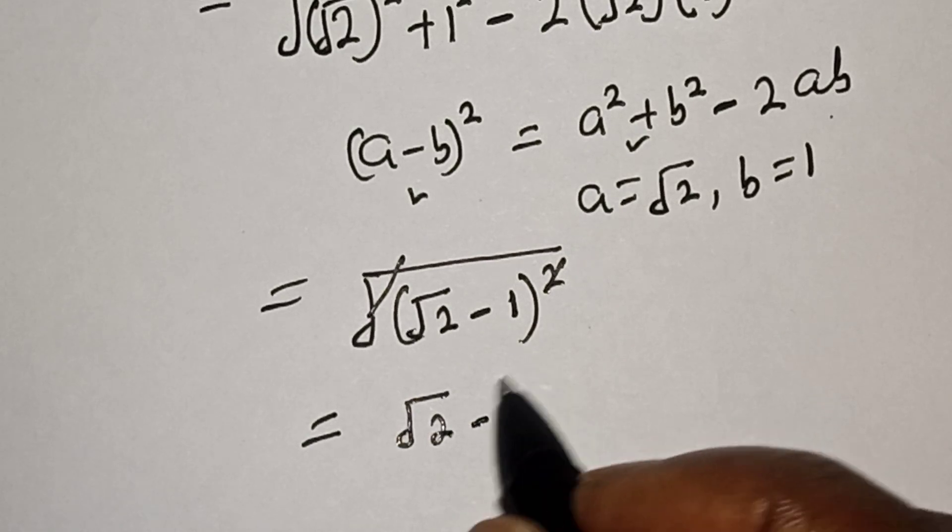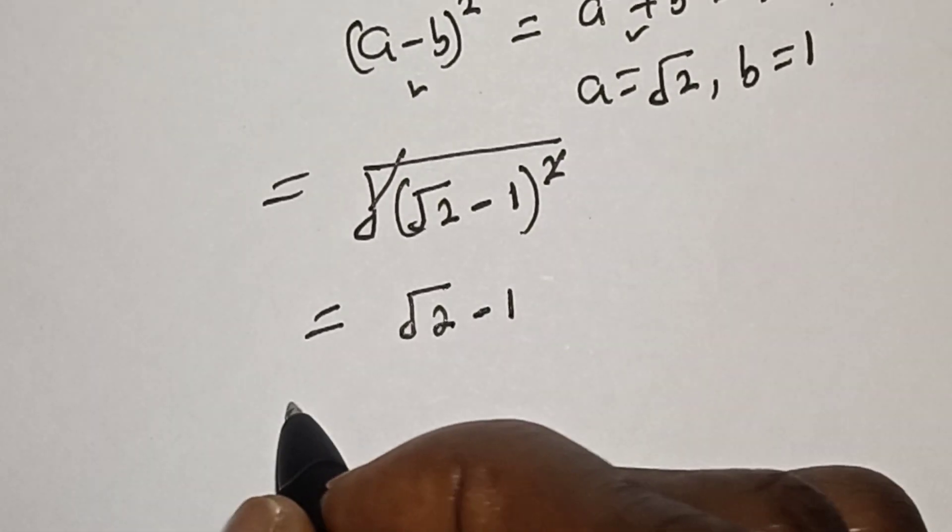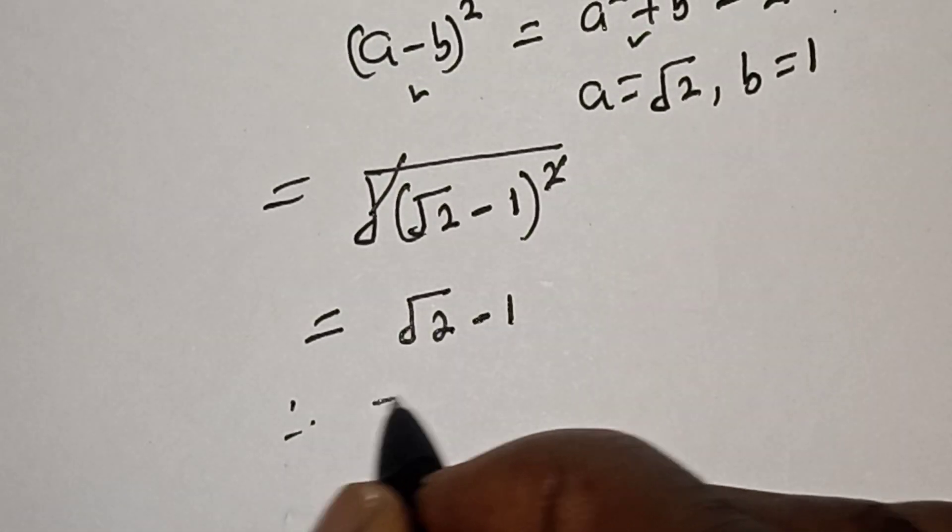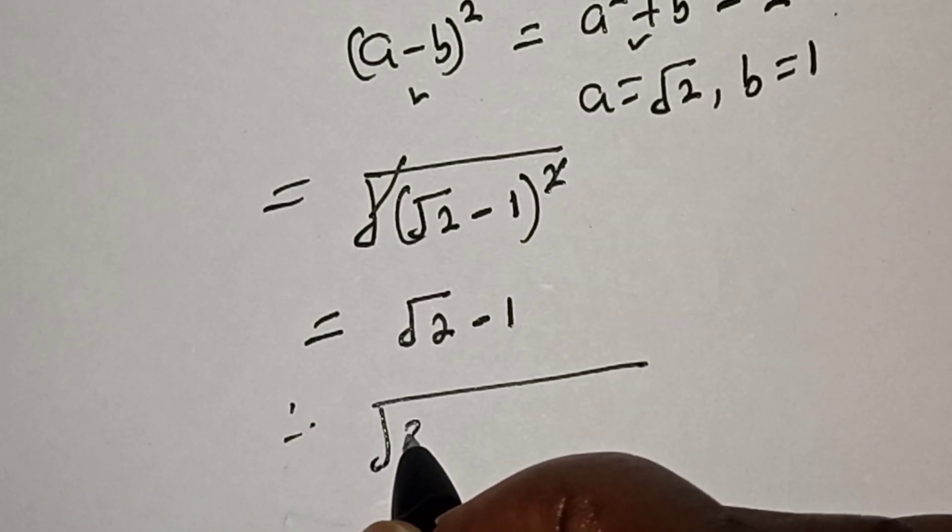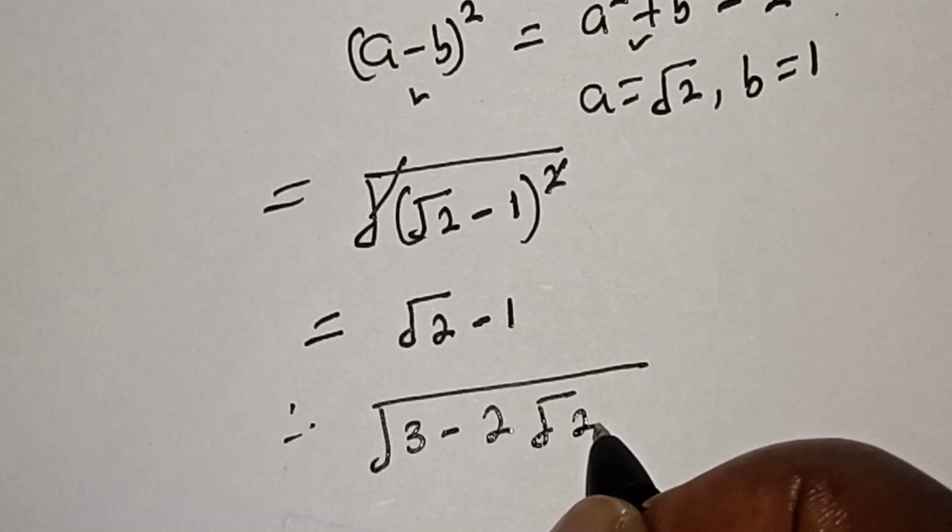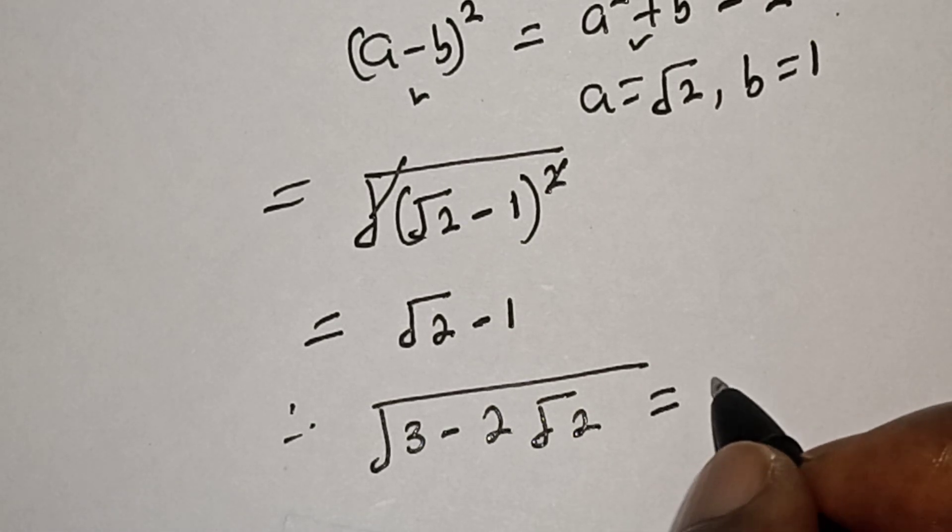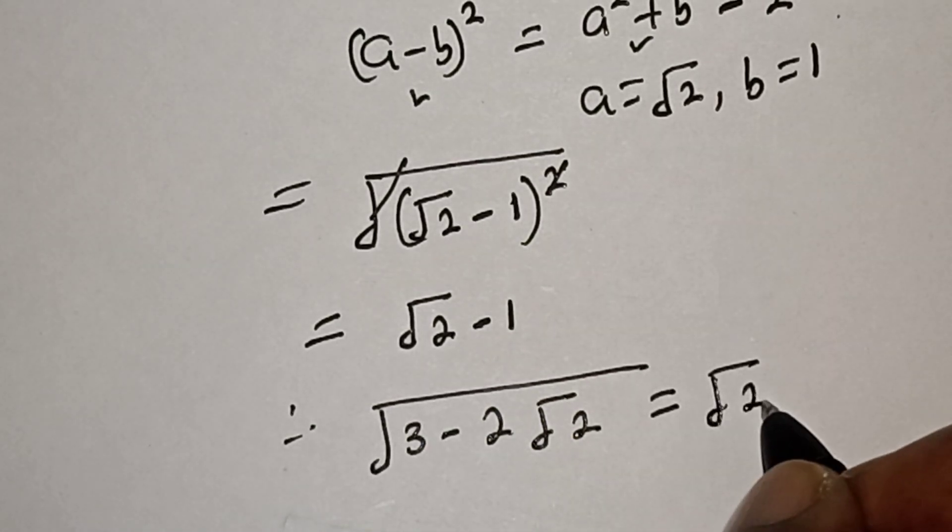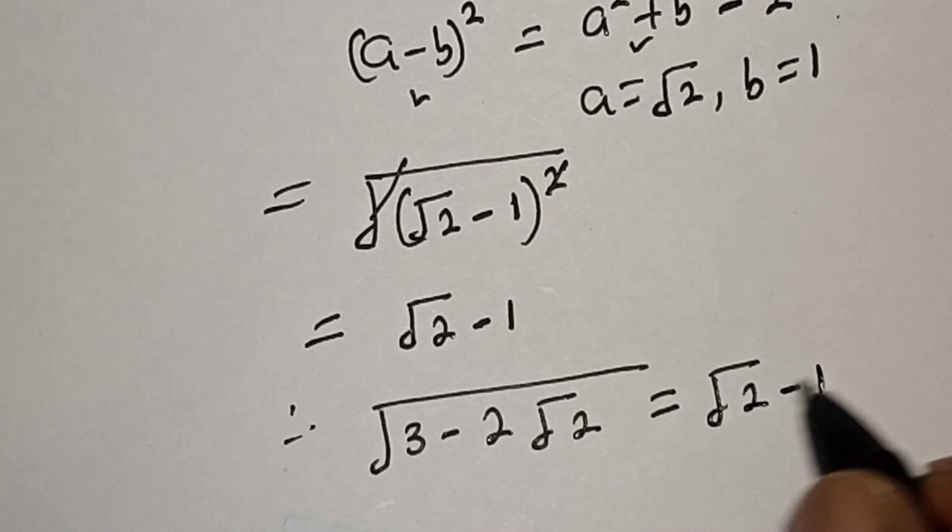Therefore, square root of (3 minus 2√2) equals √2 minus 1. That is our final answer.